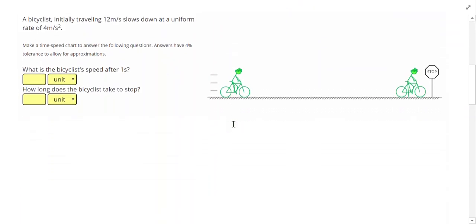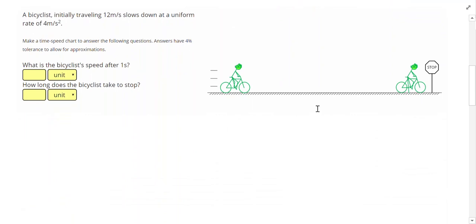Let's go ahead and take a look at another example. This one says a bicyclist initially traveling 12 meters per second slows down at a uniform rate of 4 meters per second squared. So in this problem, when we start our problem, think about starting our stopwatch. So our time is 0, our speed is initially 12 meters per second. And this time, the speed is going to decrease at a rate of 4 meters per second each second. So after 1 second, she'll be traveling 8 meters per second, which is actually our first answer. After 2 seconds, 4 meters per second. The problem asks us when she stops, so we're waiting until our speed hits 0, which occurs at 3 seconds.